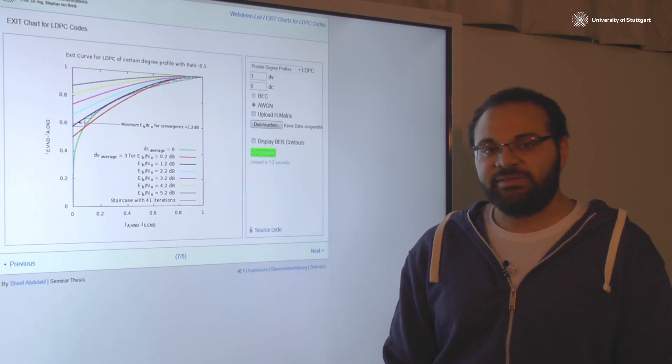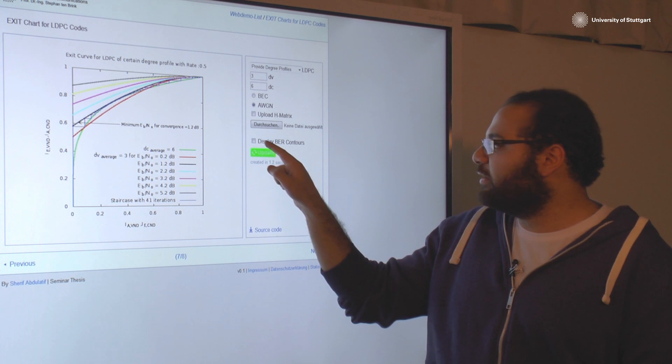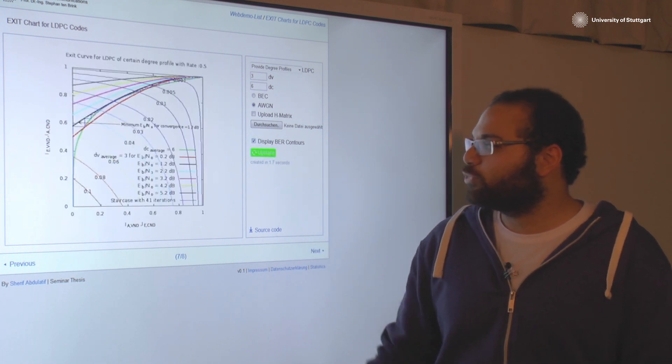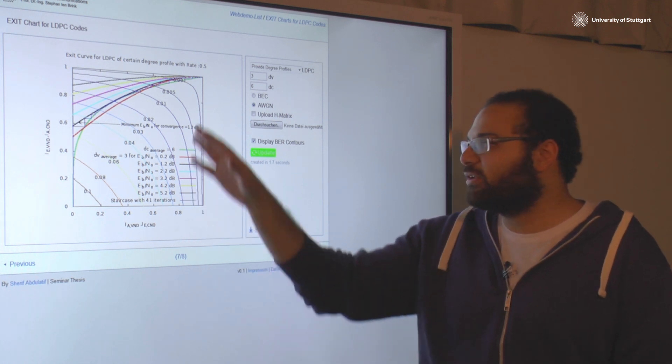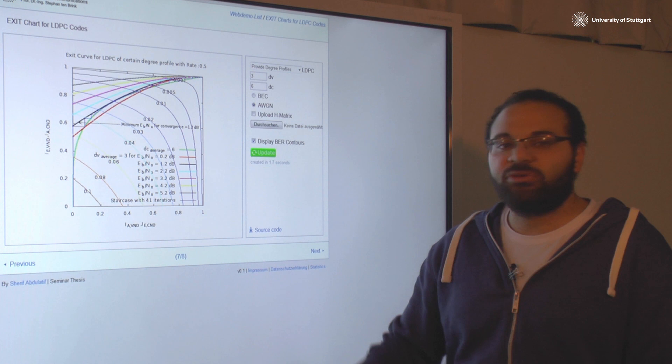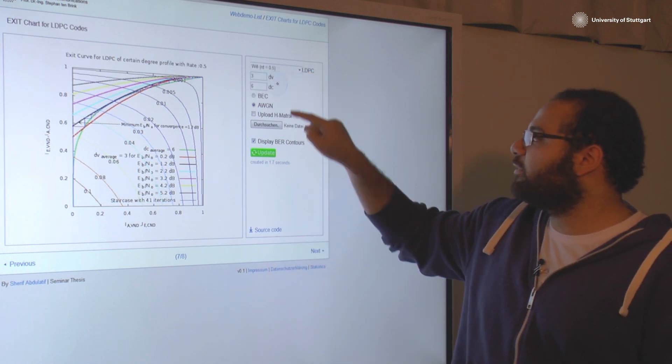Here you can display the bit error rate. We have here some bit error rate values over the different positions in the exit chart and you can do the same for different famous codes like the Wi-Fi.